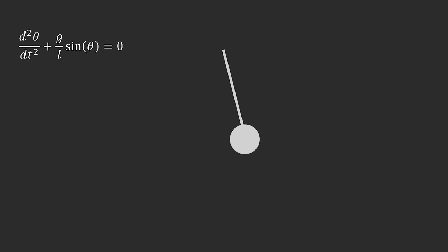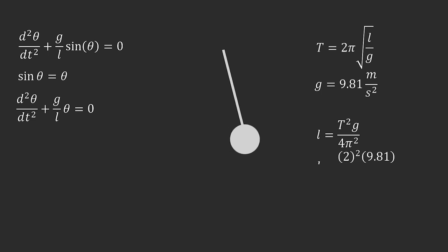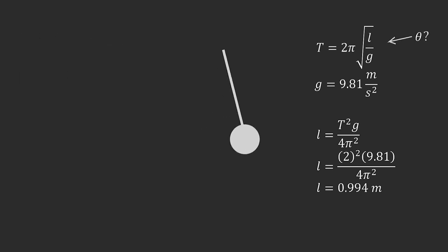It wouldn't be an engineering video without the small angle approximation. We can then calculate the period of the harmonic oscillator by taking the square root of the length of the pendulum cable over the gravitational acceleration. We want a pendulum oscillator with a period of 2 seconds, so we solve the distance from the pivot point to the center of mass.